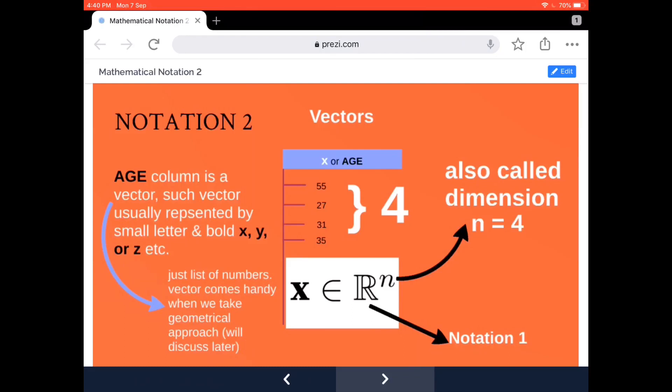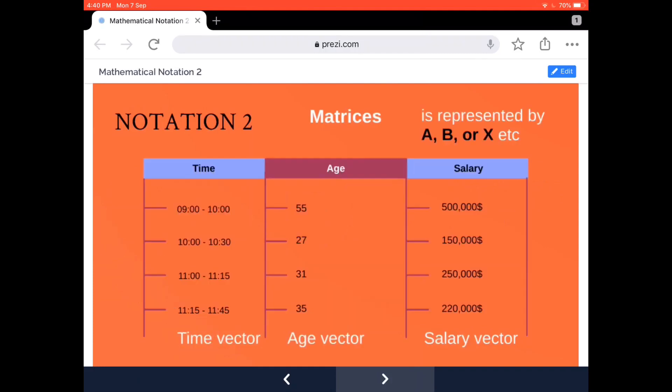Now what if I take many vectors together and stack them one next to each other? Then what I'm going to get is basically a matrix. Typically a vector would be represented using small alphabets, usually bold, whereas a matrix will be represented by a capital letter alphabet, usually bold.